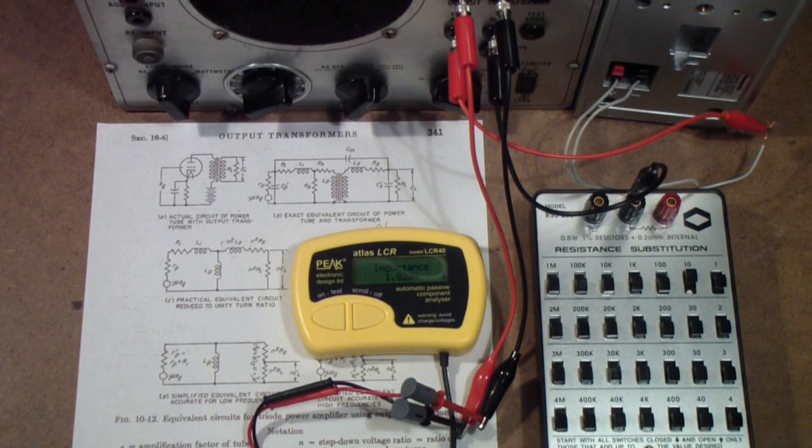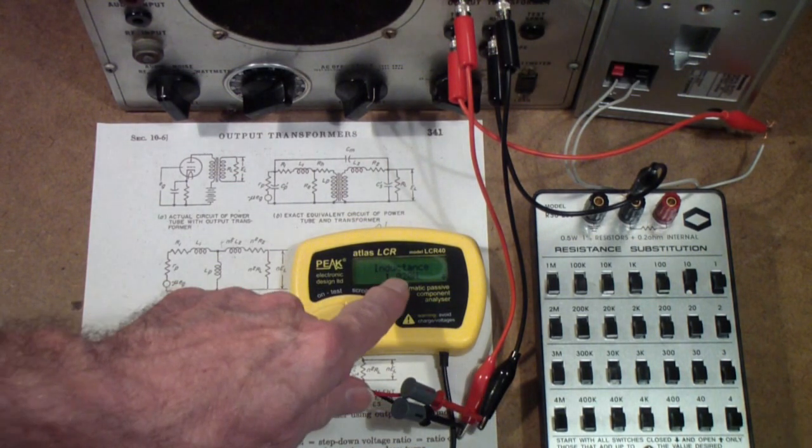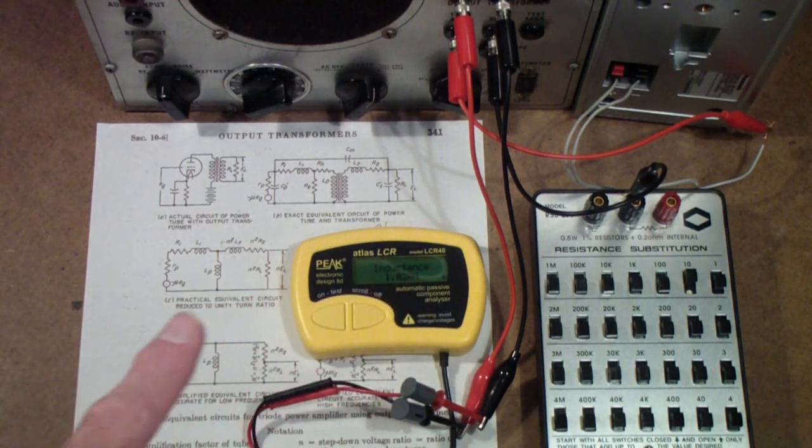The hysteresis contributes nonlinearities to the magnetic characteristics of a transformer, and those are reflected in the load that the tube sees, which contributes to the sound of a tube amp. But, the ellipse itself is due to the reactive component, which is basically the inductance that the tube sees.